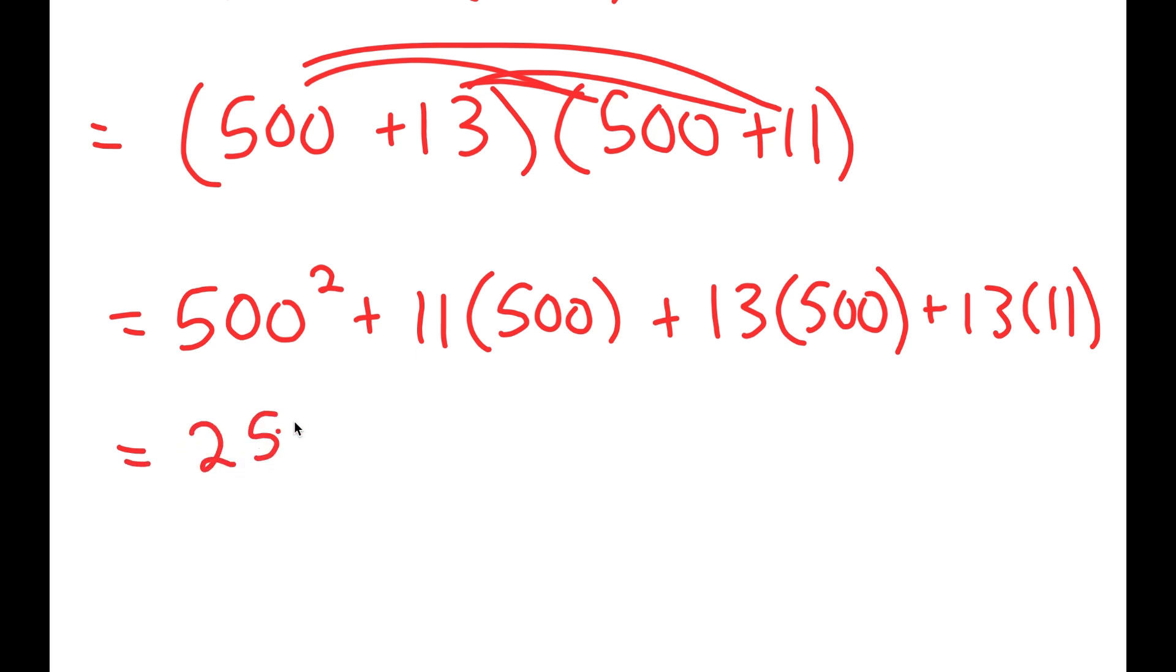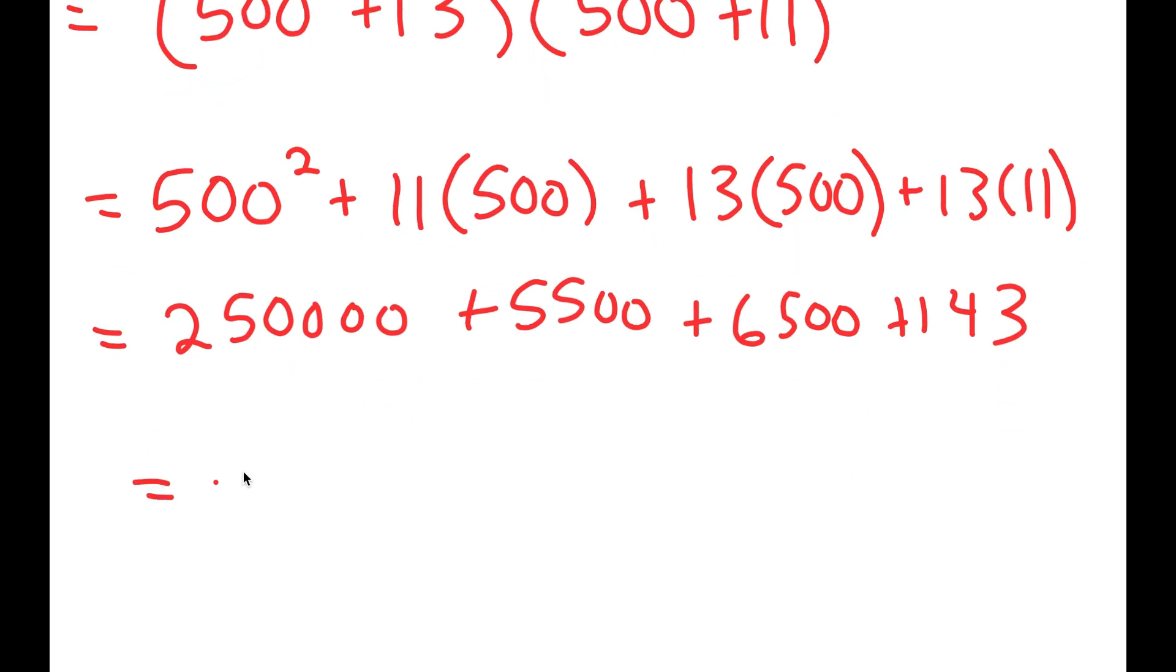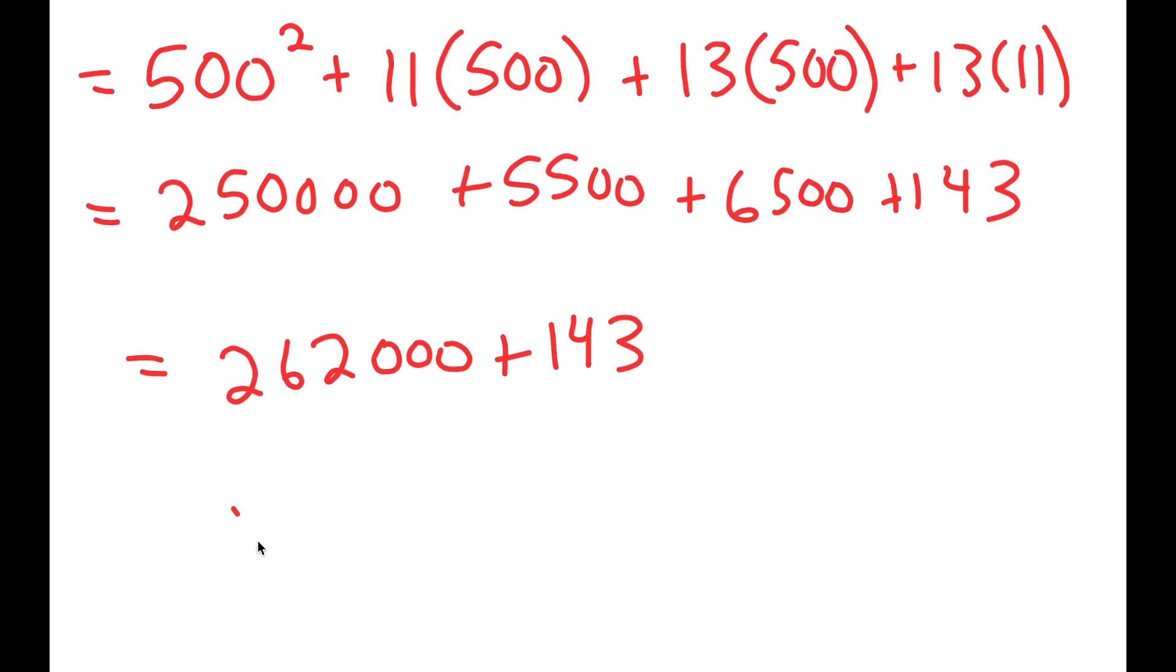So now I get 250,000 plus 5,500 plus 6,500 plus 143. And now this is equal to 262,000 plus 143, which is equal to 262,143.